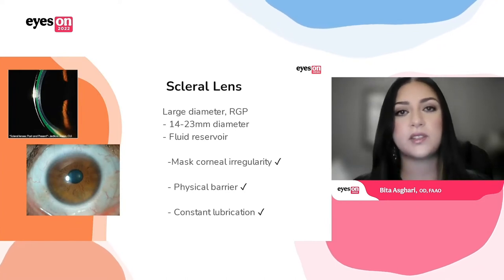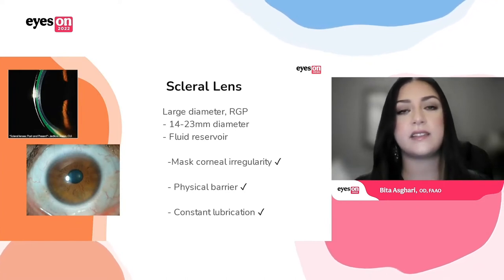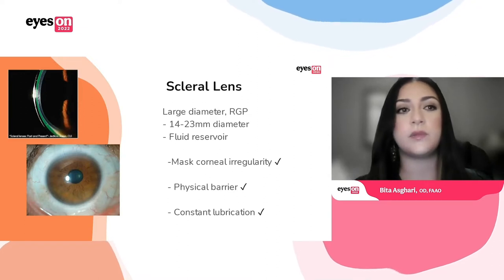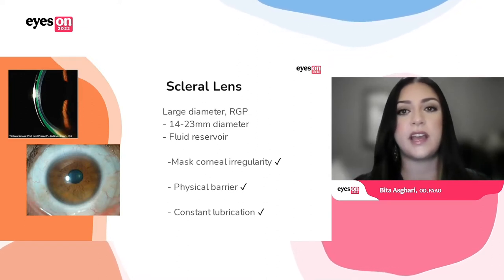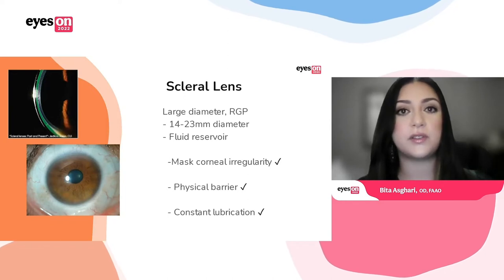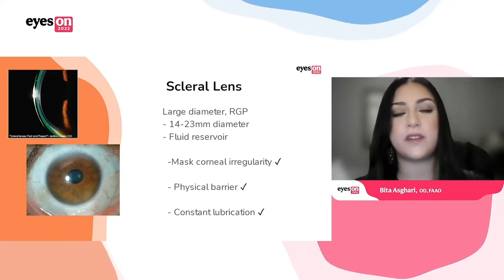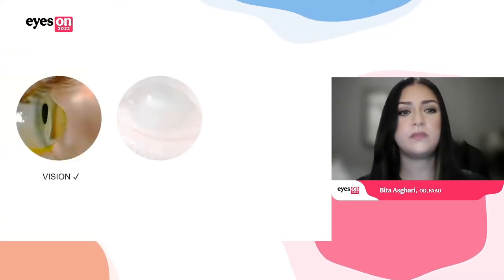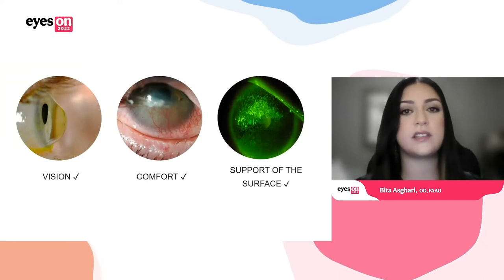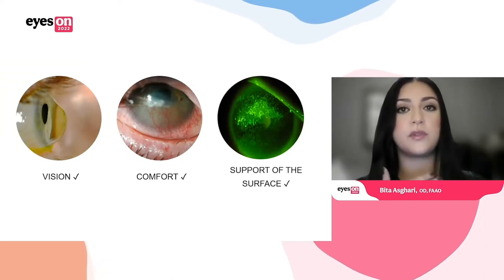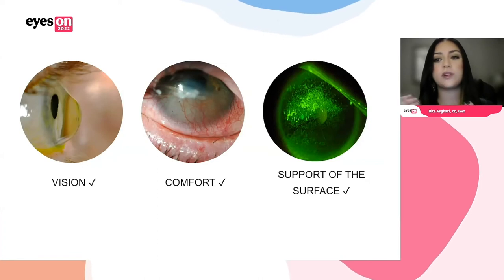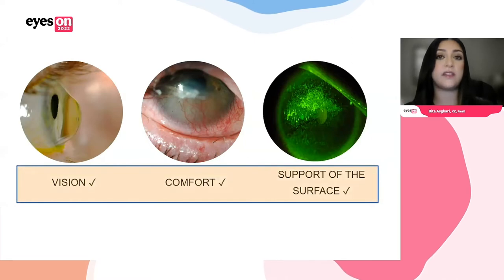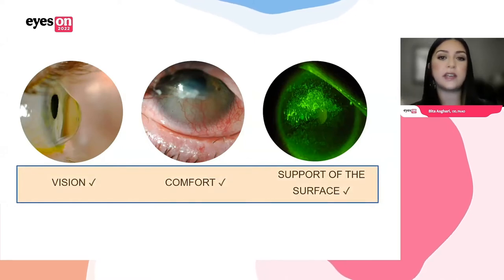There is a fluid reservoir between the back surface of the lens and the cornea, which provides constant lubrication. This entire system helps to mask corneal irregularity, provides a physical barrier, and provides constant lubrication to the ocular surface. Some of the clinical indications for your patients would be to improve their vision, improve their comfort, or support the ocular surface — and some patients may benefit from all three or any combination.